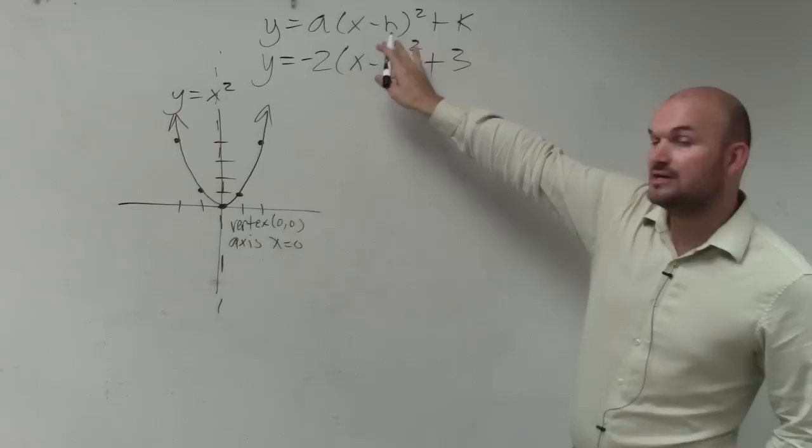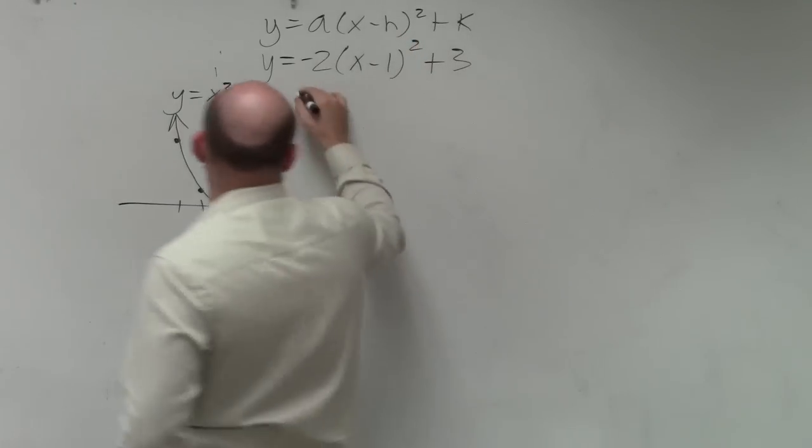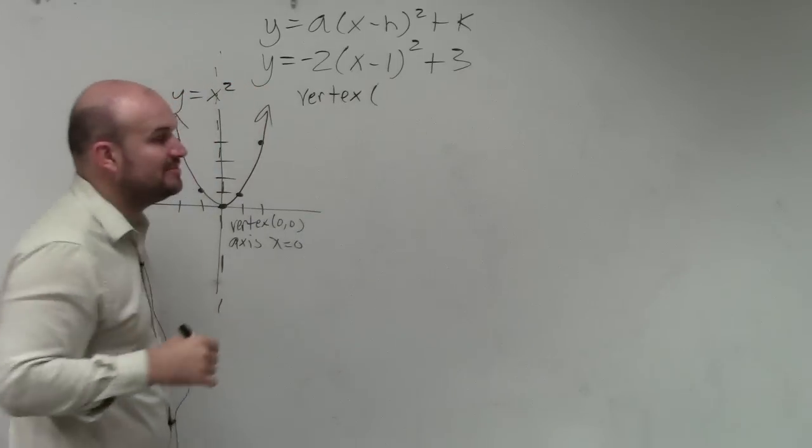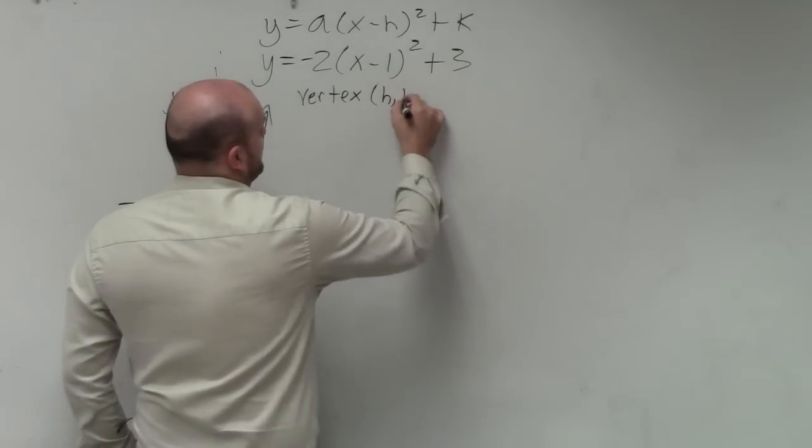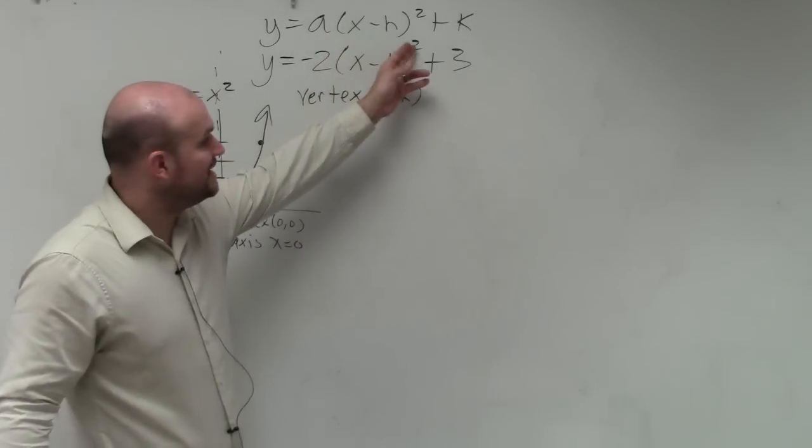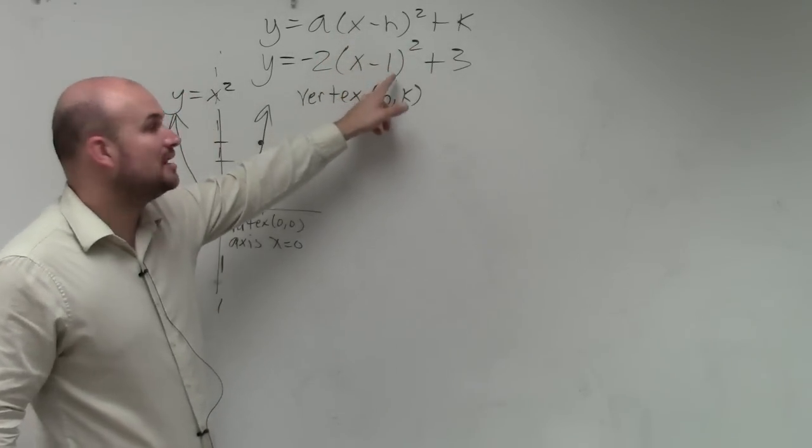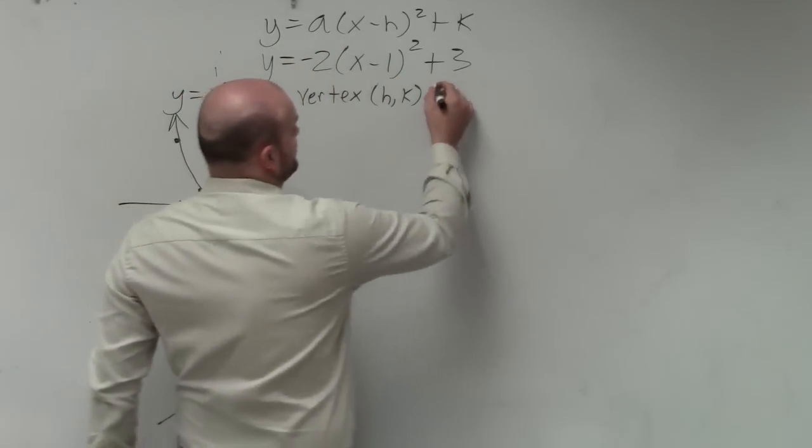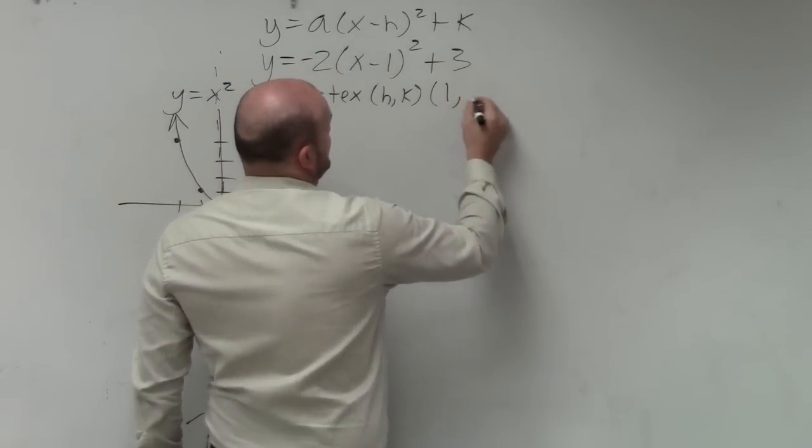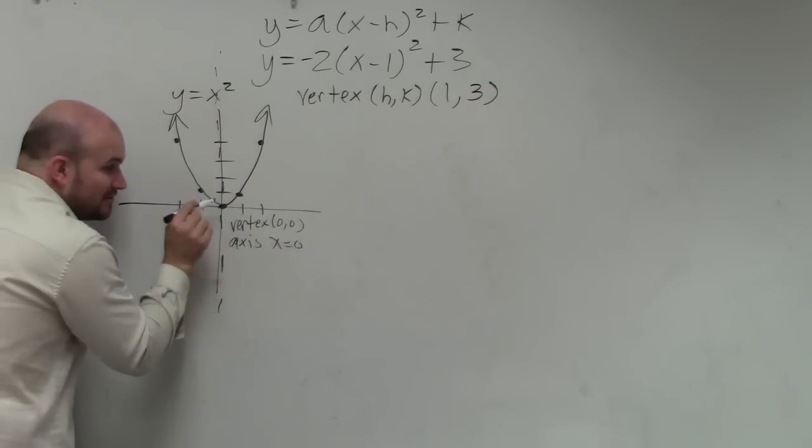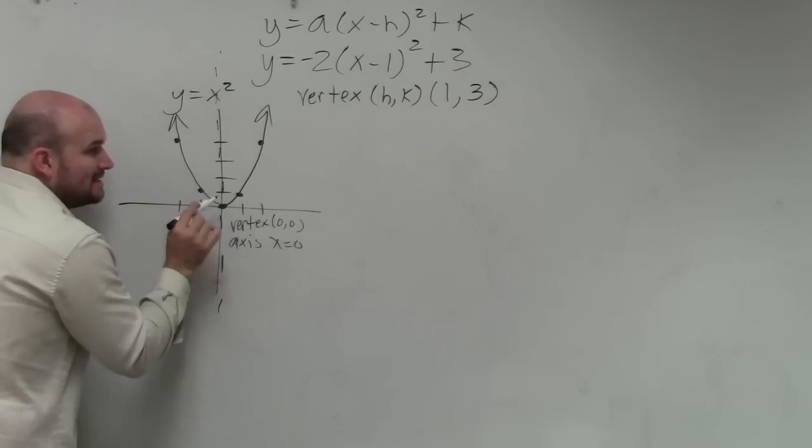So what I said that was nice about vertex form is you can quickly identify the vertex. The vertex, in this case, is going to be h, k. So remember, it's x opposite of h. So in this case, it's x opposite of 1. So you can say that h is equal to 1. And your k is equal to 3. So my new vertex, instead of being at 0, 0, is now at 1, 3.